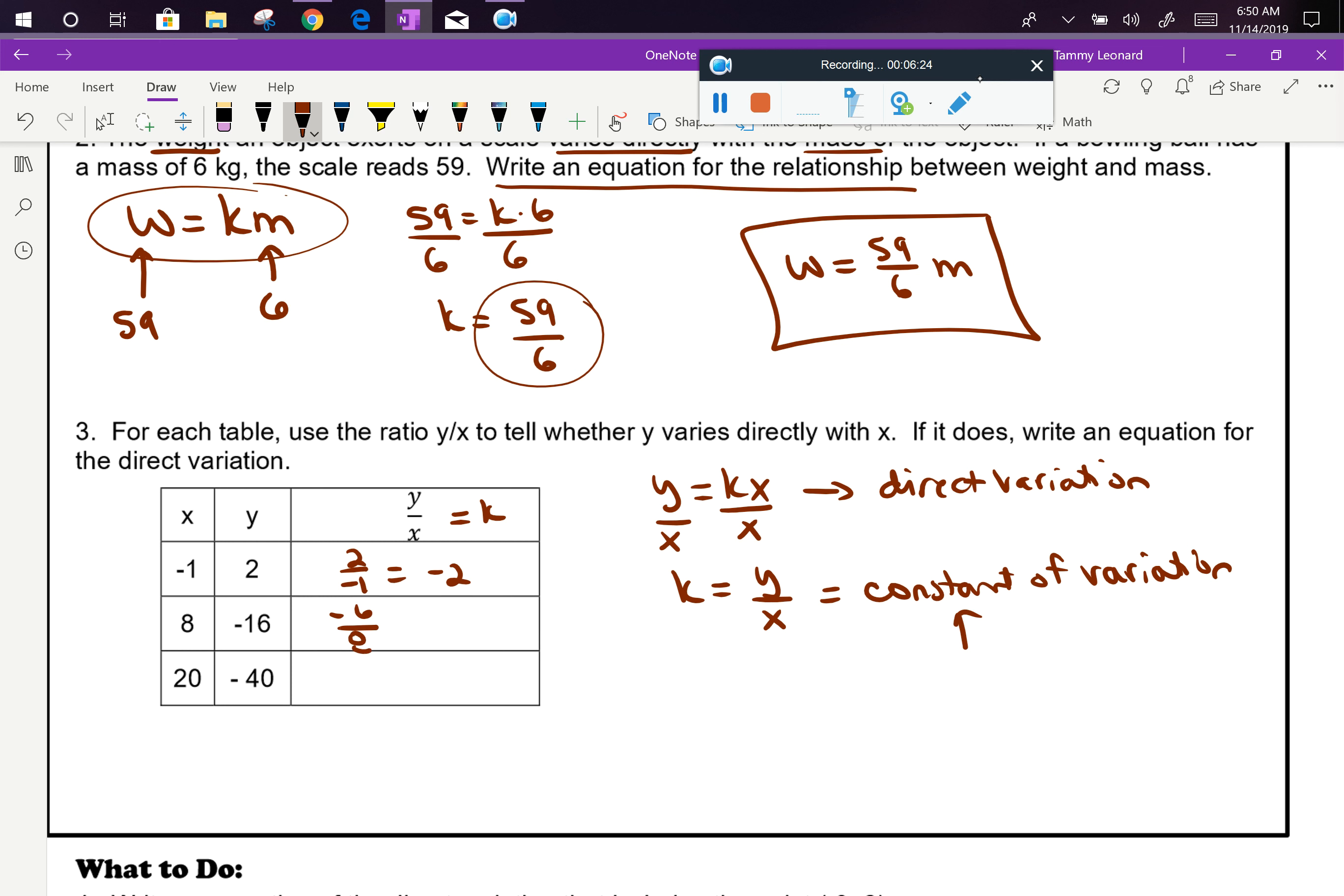Negative 16 divided by 8 is also equal to negative 2. Now I can't just stop there and assume it's going to work throughout the table. However many pairs of values I have in my table, I need to do that many tests. So now I have negative 40 divided by 20. That again is negative 2.